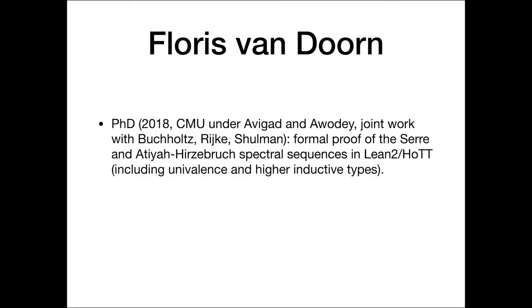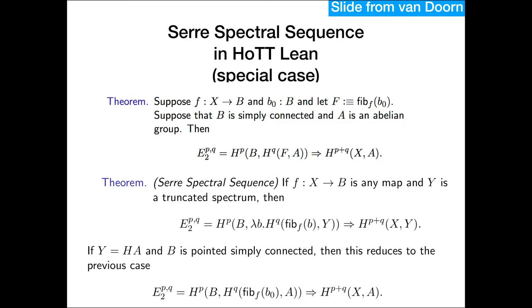So Floris van Doorn, who worked on this project, did homotopy type theory as a graduate student before starting on this project. And his PhD thesis did theory of Serre spectral sequences, Atiyah-Hirzebruch spectral sequence using homotopy type theory in the Lean theorem prover. So I think between these two examples of continuum hypothesis and theory of spectral sequences, you really see the power of this particular theorem prover. And this is one of the reasons I switched from HOL Light over to Lean, is that HOL Light just doesn't have the same capabilities as this more powerful theorem prover.